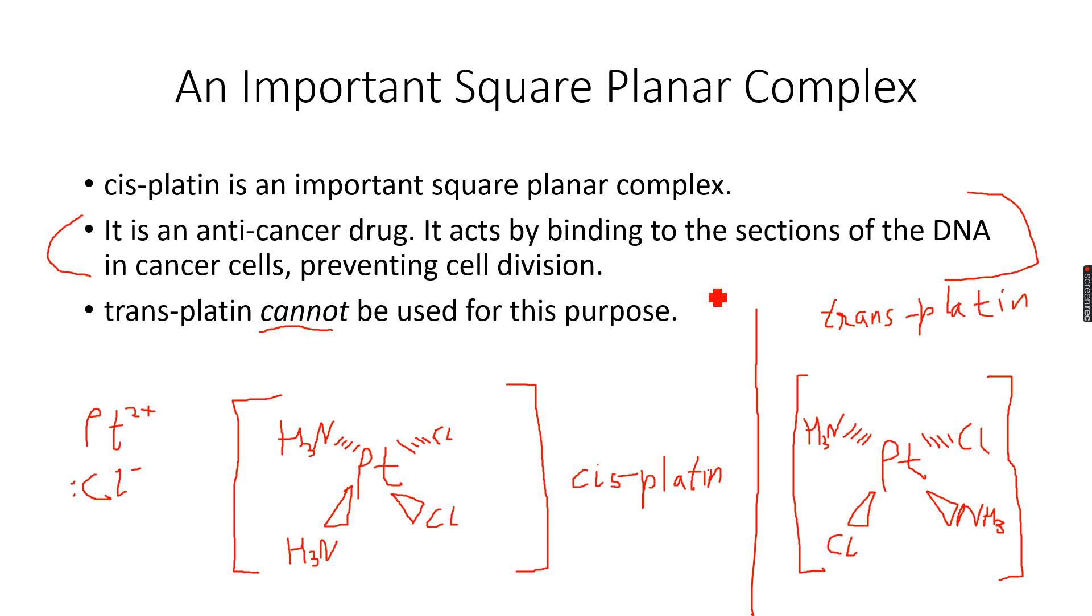For this playlist, what you need to know for transition elements, that this important square planar complex, cisplatin, is used in medical applications. I urge you to remember the structure: two NH3 molecules, two chloride ions, and a platinum Pt central metal ion.